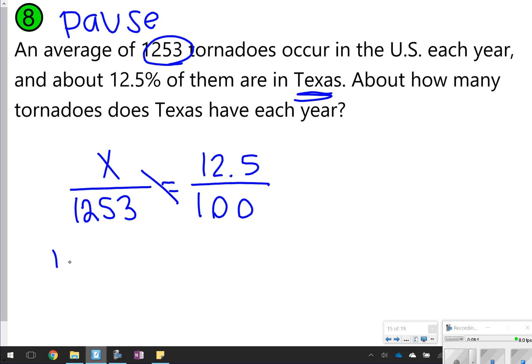So cross-multiplying, I'm going to get 100 times x, and then 1,253 times 12.5, I got 15,662.5.